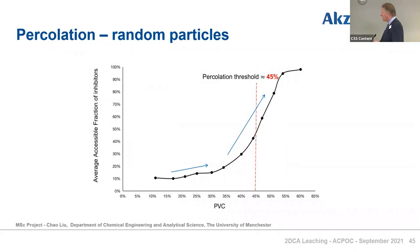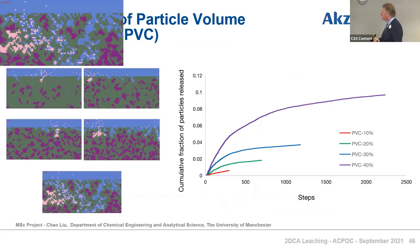One of the MSc students, Charlie, has had a look at some of these and managed to generate percolation behaviour — which is, once again, something you'd expect. If the particles aren't connected, you get low levels of release. Once particles start to be connected and you get towards percolation, you have release, as expected. That looks sensible, though we're not learning a great deal new there. Similarly, the results from Reza showed that different levels of PVC give different levels of release. Here it's a bit more black and white, but basically high levels give high release that continues for a long time.